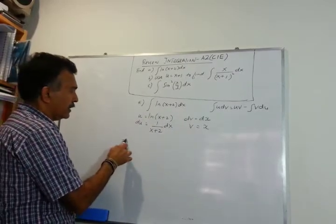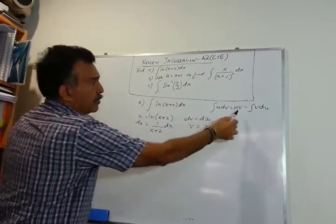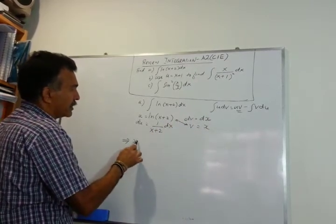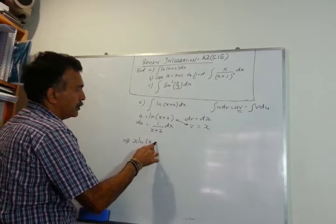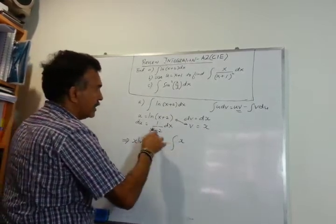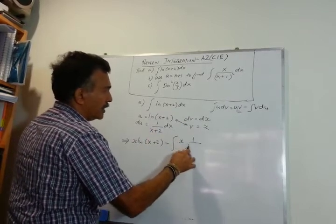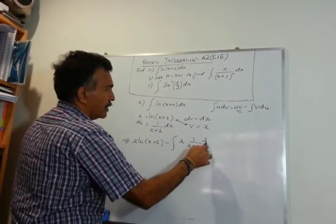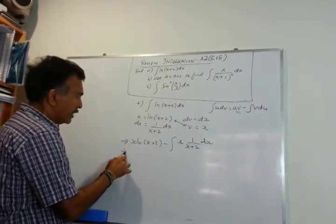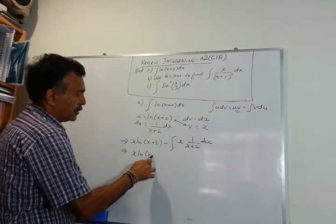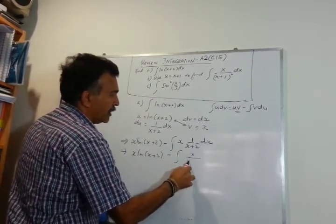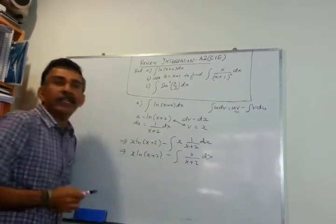Now using the by parts formula, uv gives us x·ln(x+2), minus the integral of v du which is x · (1 over (x+2)) dx.